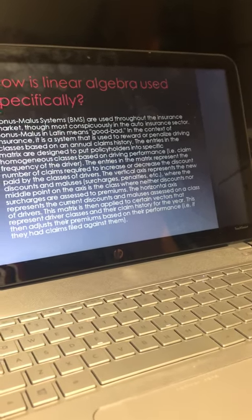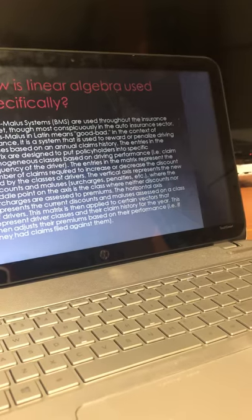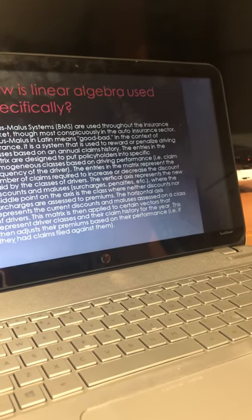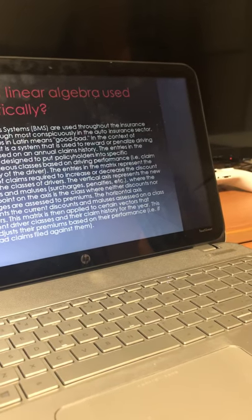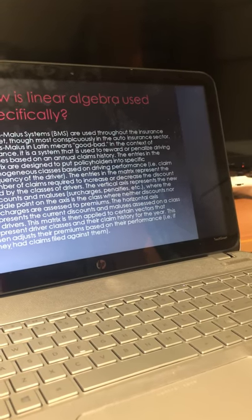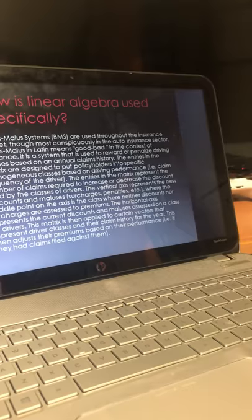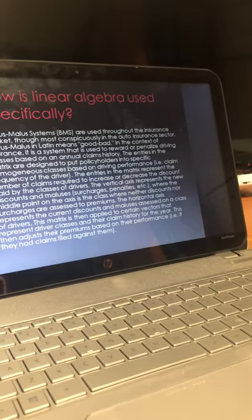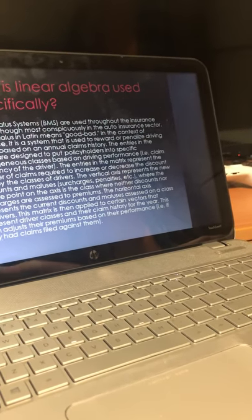The entries in the matrix are designed to put policyholders into specific homogenous classes based on driving performance. Claim frequency of the driver is used. The entries in the matrix represent the number of claims required to increase or decrease the discount paid by the classes of drivers.